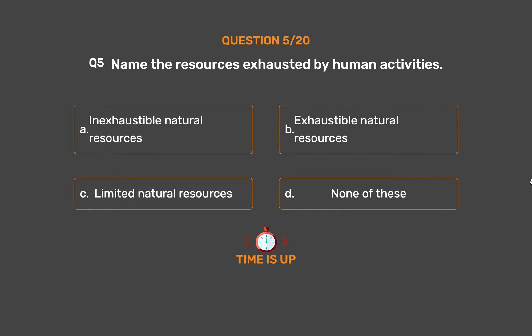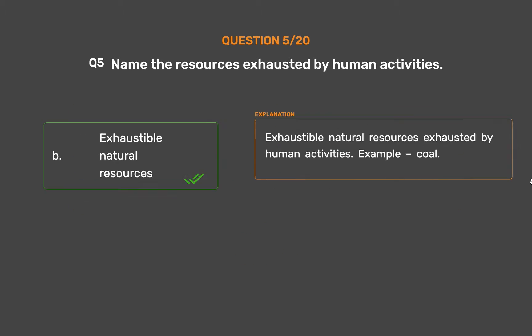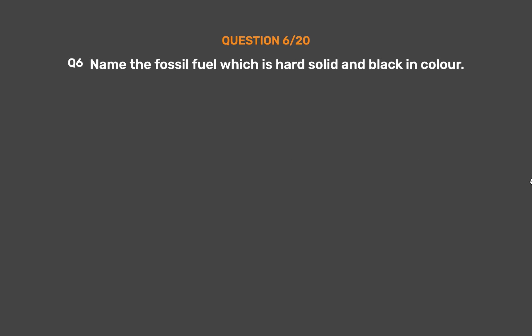The correct answer is Option B: Exhaustible natural resources. Exhaustible natural resources are exhausted by human activities. Example: Coal.